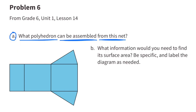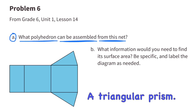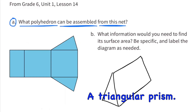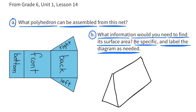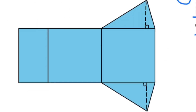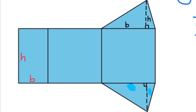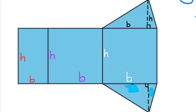Number 6A. What polyhedron can be assembled from this net? A triangular prism. Part B: What information would you need to find its surface area? You would need the height of the triangle and the length of the base of the triangle. You would also need the height and the base of the three other rectangular faces that make up this polyhedron.